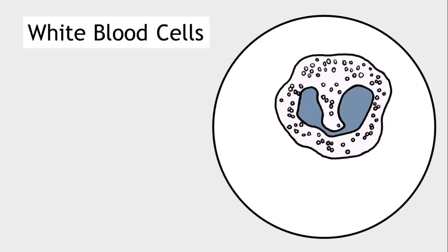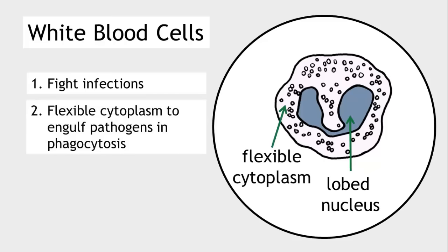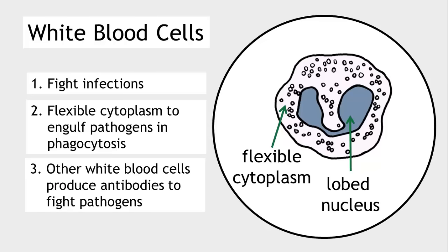Finally, white blood cells enable us to fight infections. They can be identified by the characteristic lobed nucleus. White blood cells have a flexible cytoplasm so that they can engulf pathogens in a process called phagocytosis. Some other white blood cells are specialised to produce antibodies and it's these antibodies that fight pathogens.